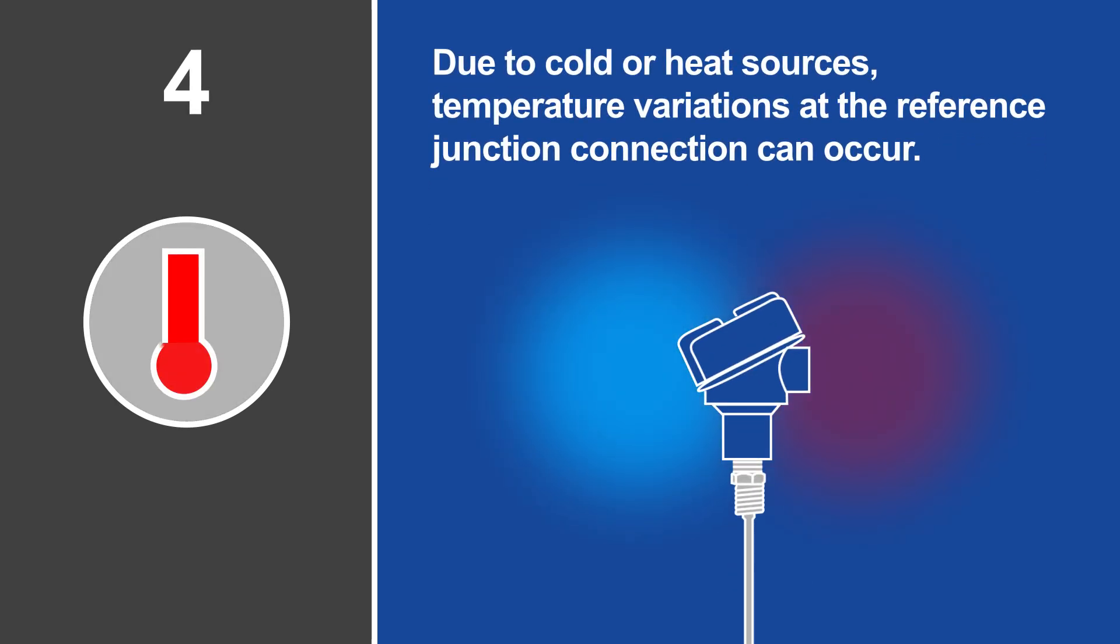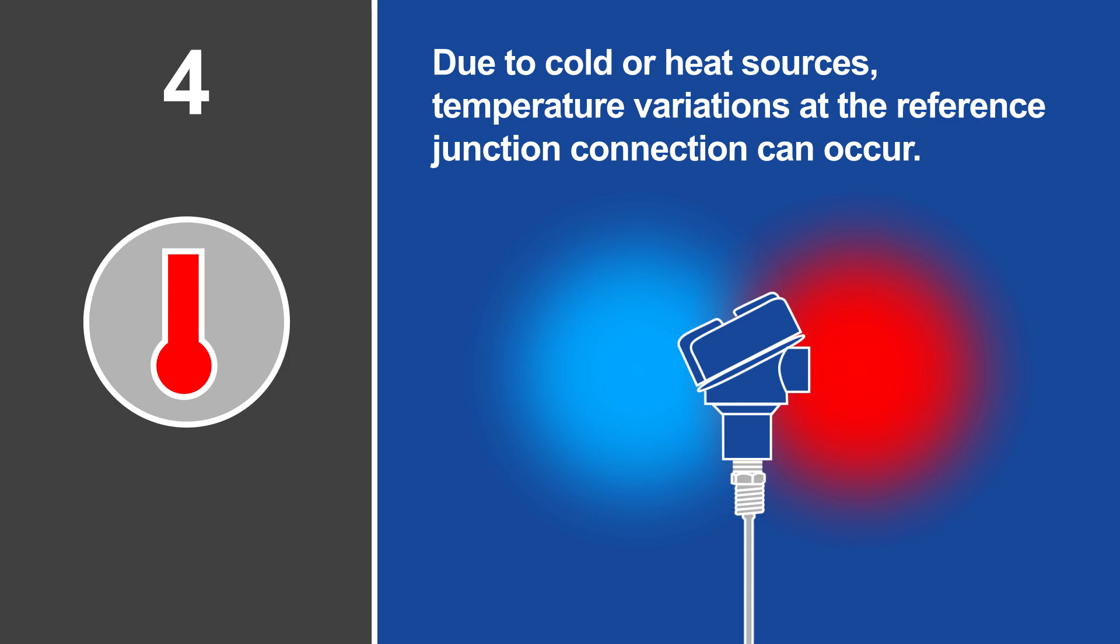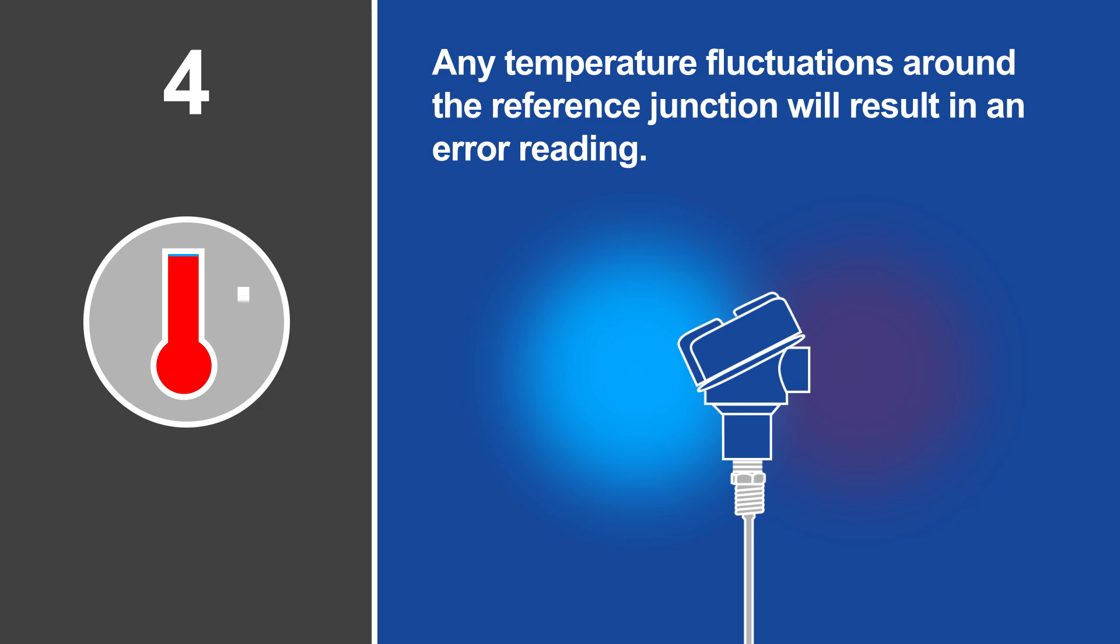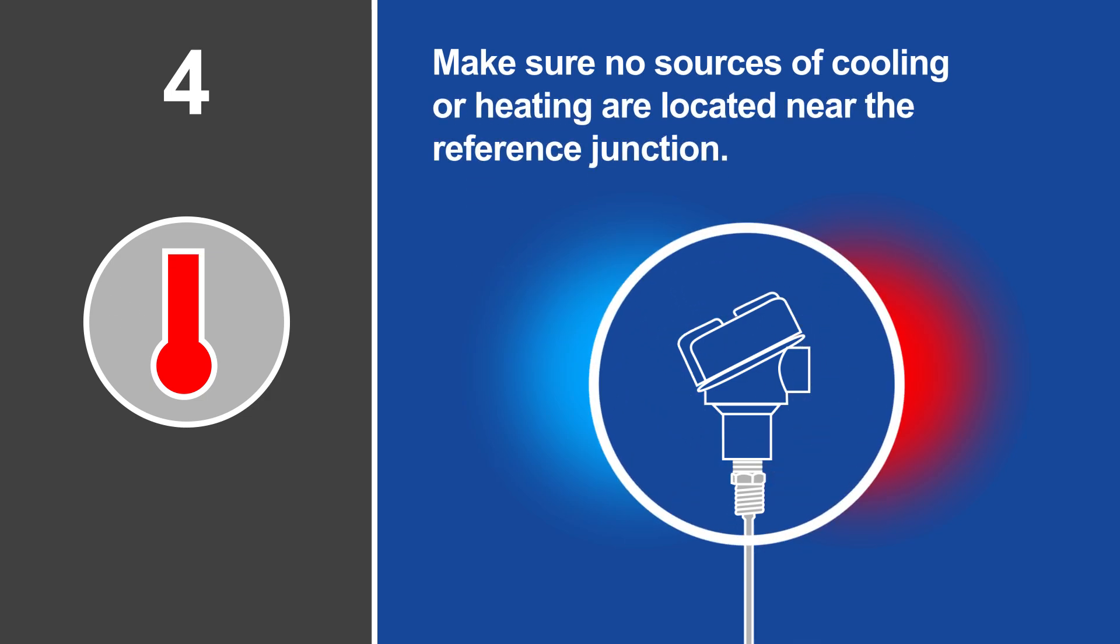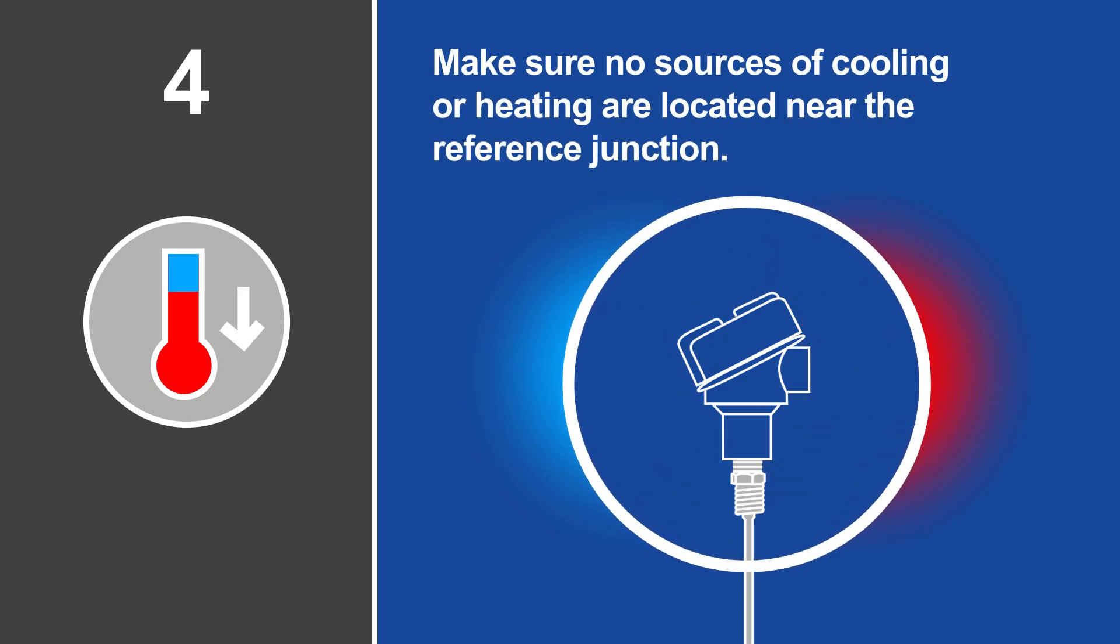Due to cold or heat sources, temperature variations at the reference junction connection can occur. Because a thermocouple measures temperature differentials, any temperature fluctuations around the reference junction will result in an error reading. The solution is to make sure no sources of cooling or heating are located near the reference junction. Simple insulation can also protect the junction from extreme temperatures.